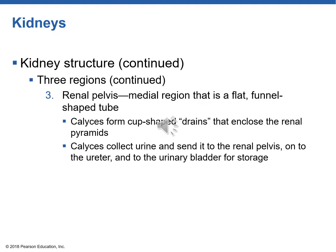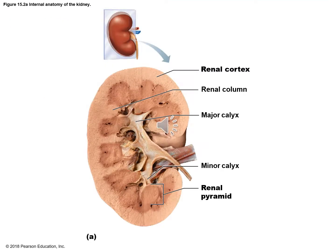Minor calyces collect urine and dump it into major calyces, which then dump urine into the renal pelvis — we think of that as kind of a funnel shape. So the renal pelvis is where the urine finally collects from all areas of the kidney. On the very outside of the kidney there would be a renal capsule, and right inside that is a lighter area known as the renal cortex, the outer portion of the kidney. Inside that we have the renal medulla, and the innermost part is the renal pelvis. Also shown here are the minor calyx and the major calyx — the minor dumps urine into the major calyx, which then dumps into the renal pelvis.